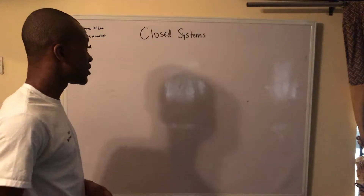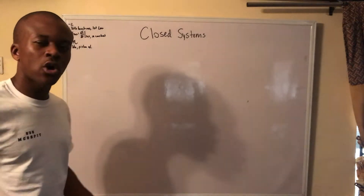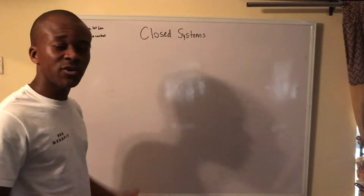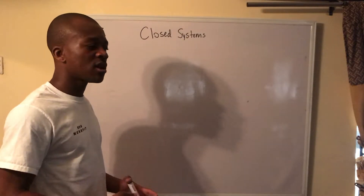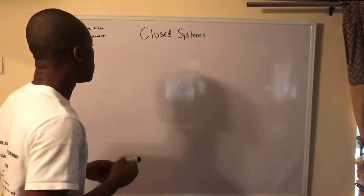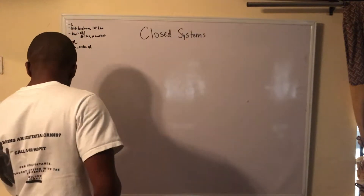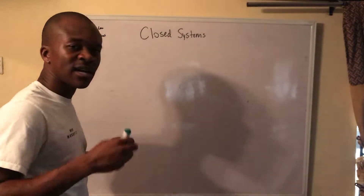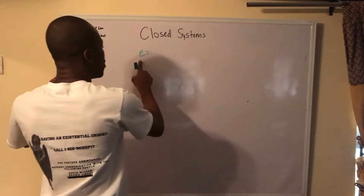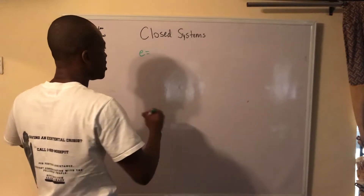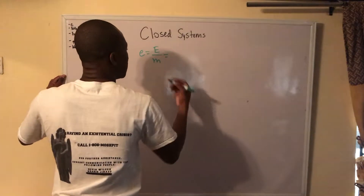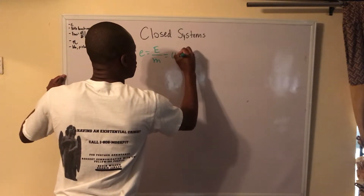Today we're going to be talking about closed systems. We deal with open systems and closed systems in thermodynamics, and I'm going to give you some tips and tools for dealing with closed systems. First off, we'll start by talking about energy — we have a general energy equation where this small e means energy over mass, and that's denoted by u.